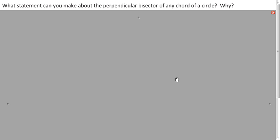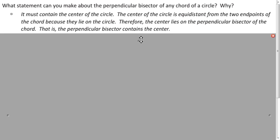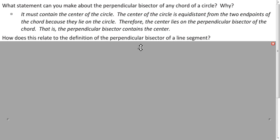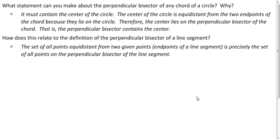Well what can we say about the perpendicular bisector of any chord on a circle? Well it has to have the center, because the center is equidistant from the two endpoints on the chord. We can always draw radii from the center to those endpoints. And that ties into our definition of perpendicular bisector. We know that all the points equidistant from two given points gives us a perpendicular bisector, and the circle satisfies that criterion. So that's always going to be the case.